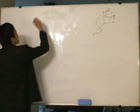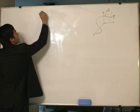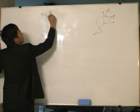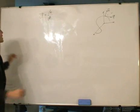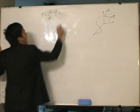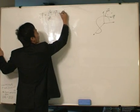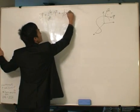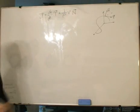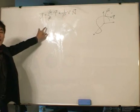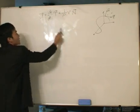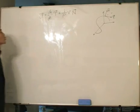That is written as this: the acceleration of a particle is equal to the derivative of the velocity dv/dt times the unit tangent vector, plus 1 over rho times v squared times the unit normal vector. That is the acceleration — we have decomposed the acceleration in terms of the unit tangent vector and the unit normal vector.